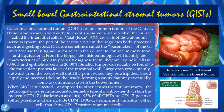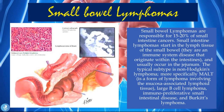Large GISTs grow mainly outward from the bowel wall until they outstrip the blood supply, undergo necrosis, and die on the inside, forming a cavity that may eventually come into contact with the bowel lumen. When a GIST is suspected, a pathologist can use immunohistochemistry with specific antibodies that stain the molecule CD117, also known as c-KIT. 95 percent of all GISTs are CD117-positive. Other possible markers include CD34, DOG1, desmin, and vimentin. Other cells that show CD117 positivity are mast cells.